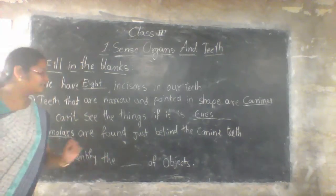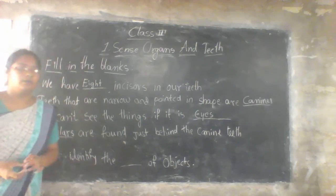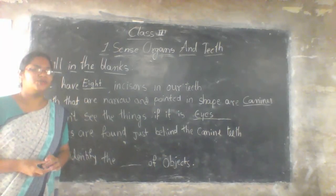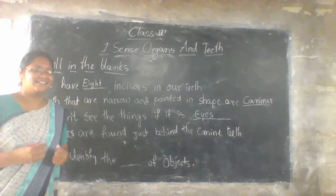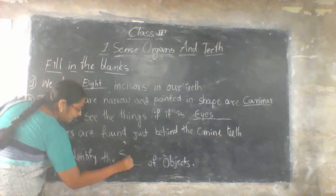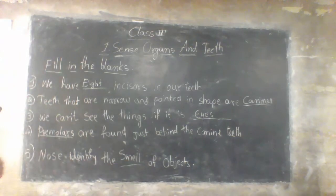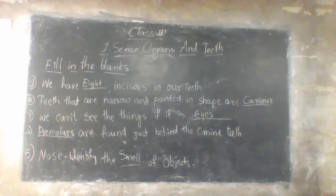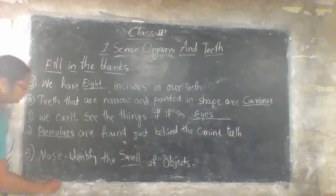Next one: nose identifies the blank of an object. Why do you use your nose? To smell. The answer is smell — S-M-E-L-L. Write these fill-in-the-blank answers in your CW neatly.